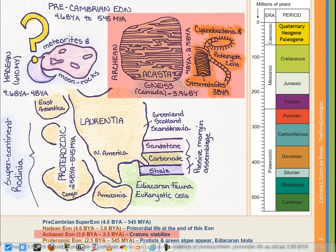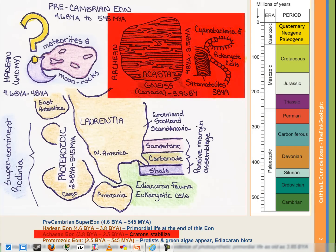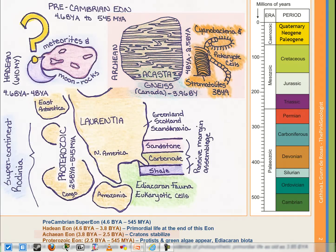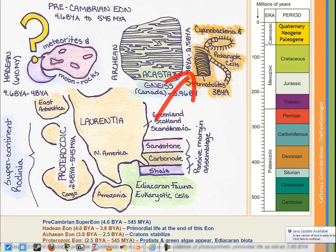Next we have the Archean, which goes from about 3.8 billion years to about 2.5 billion years ago. During this time, the main cratons that exist now — things like the North Canadian Shield — probably began to stabilize near the end of the Archean. We also find our first stromatolite evidence here, in the Middle Archean around 3.2 billion years ago. These structures were built probably by colonial cyanobacteria, and we see stromatolites forming even today. At the end of the Archean, we even see some orogeny events — mountain building.